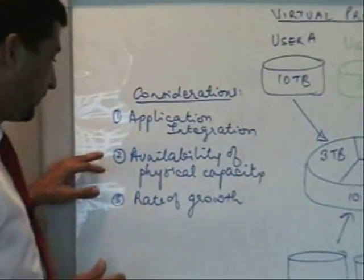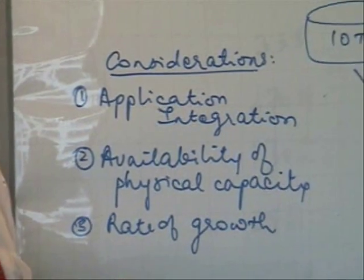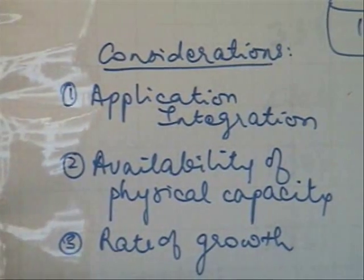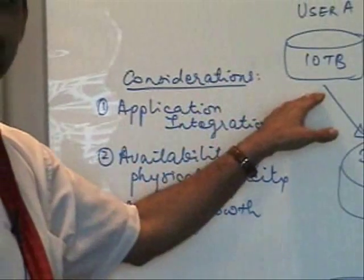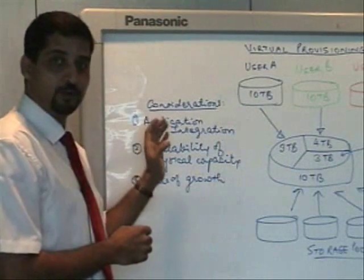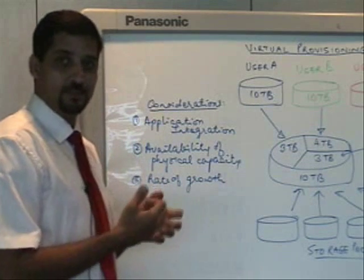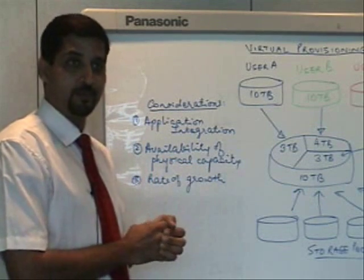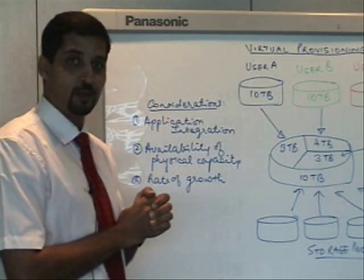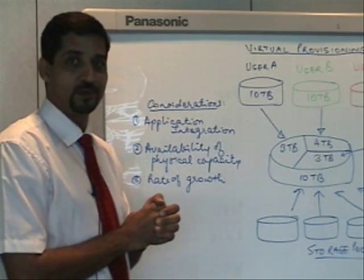Points two and three are tied together. You are estimating the rate of growth — but what if that estimate is lower than the actual growth? Make sure you have some amount of physical capacity available in the pool so that if 10 terabytes get used up much faster than the one year estimated, you won't fall short of capacity. Maybe not the full 30 terabytes in this example, but an additional 5 or 10 terabytes, so that as users start using more space, you have sufficient time to add new capacity as and when required.